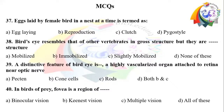Question number 40: In birds of prey, the fovea is a region of dash. Option A: binocular vision. Option B: keenest vision. Option C: multiple vision. Option D: all of these.